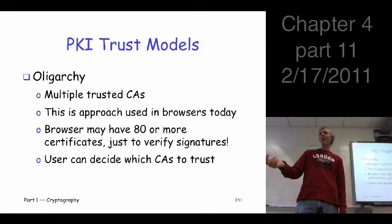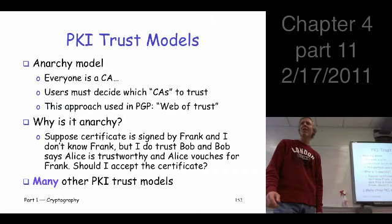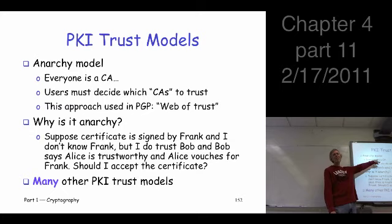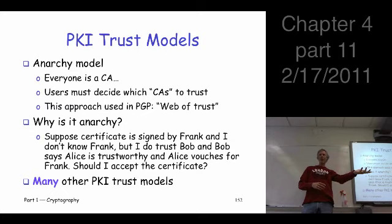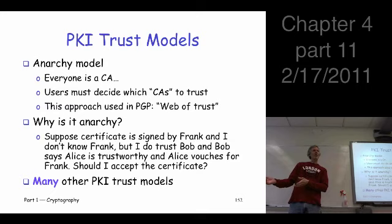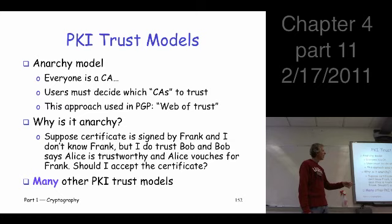If we could have one, or a few, or we could have a lot — let's just make everybody a CA. Why not? Everybody can be a CA. Let's call that the anarchy model. So basically, everyone's a CA. Everyone can sign. You can create public and private key pairs, give the private key to the right person, and sign the certificate. Anybody can, in principle, create a certificate. But now it's up to you, as the user, to decide whether you trust the person who signed it.